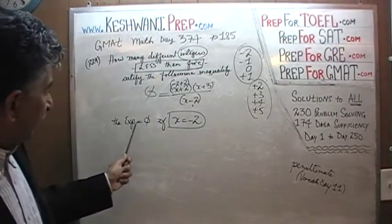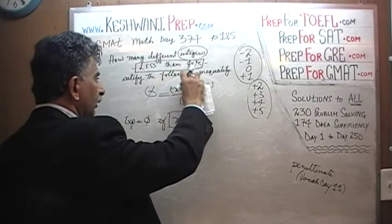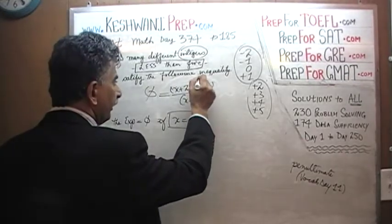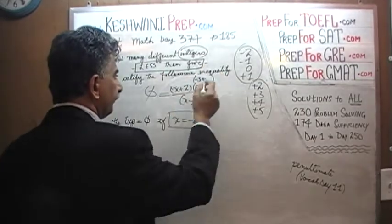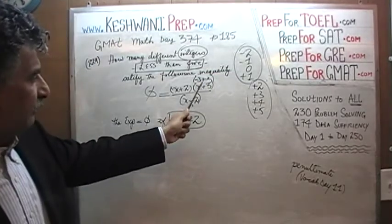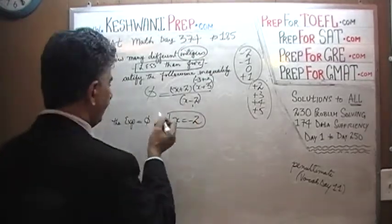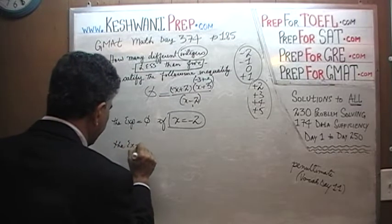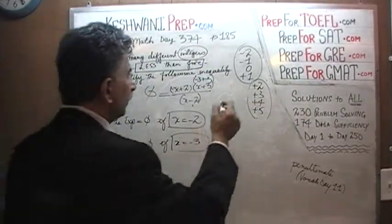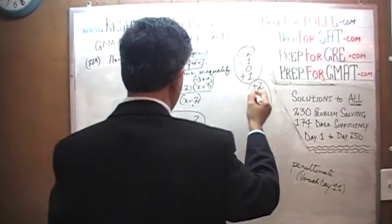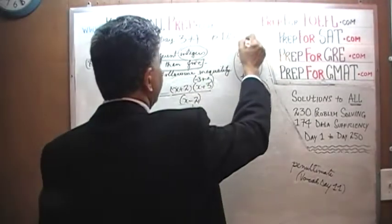Another place where the expression is zero is when x+3 equals zero, which happens when x equals negative 3. Because negative 3 plus positive 3 is zero, and zero times anything is zero, and zero divided by anything is zero. So the expression also equals zero when x equals negative 3. Both negative 2 and negative 3 work.